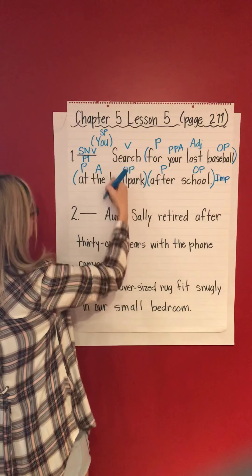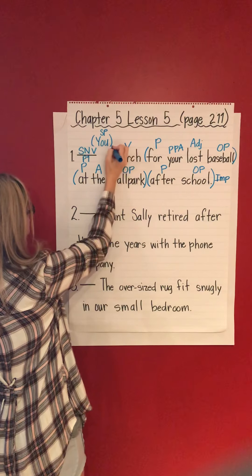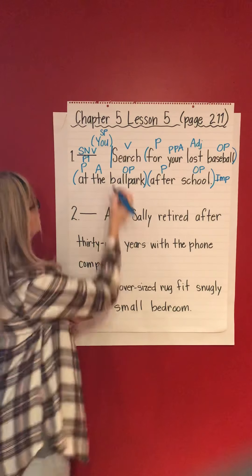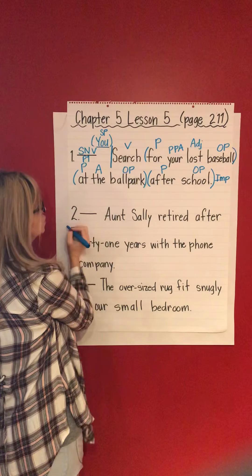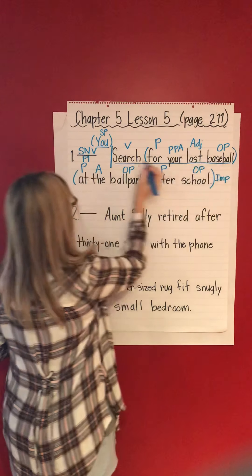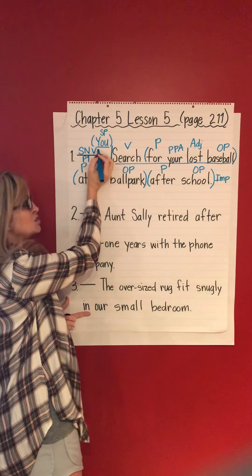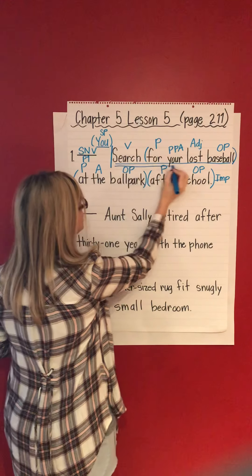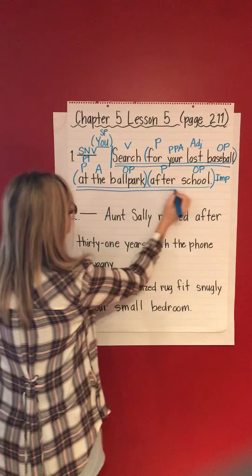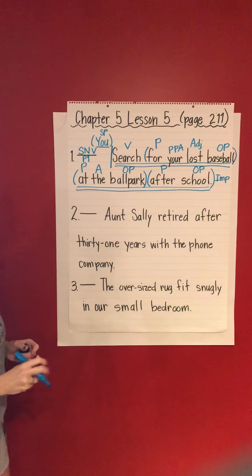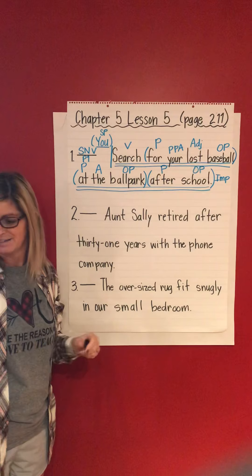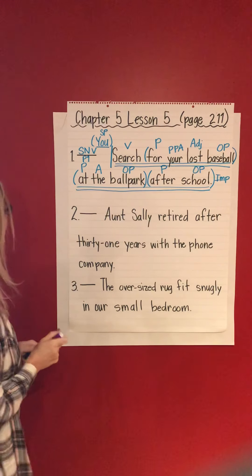Go back to the verb, divide the complete subject from the complete predicate. Underline the complete subject once and the complete predicate twice. It's really easy to get mixed up and say the wrong word sometimes, so double check what you're saying.